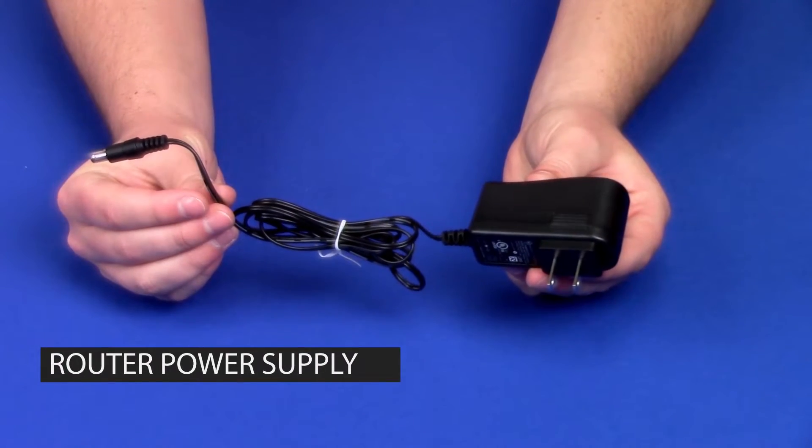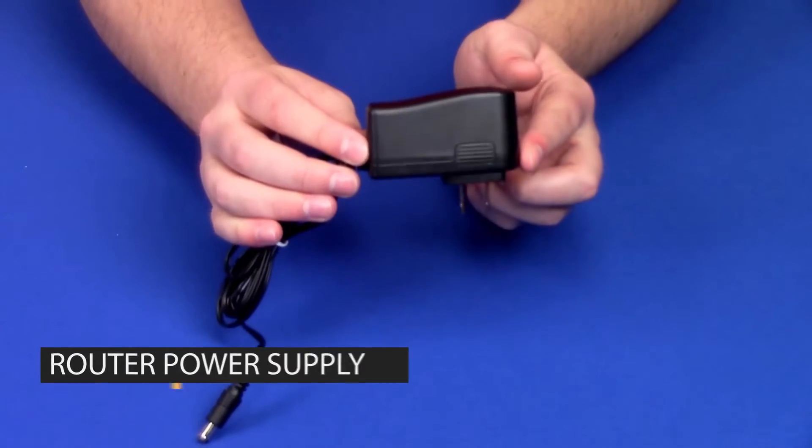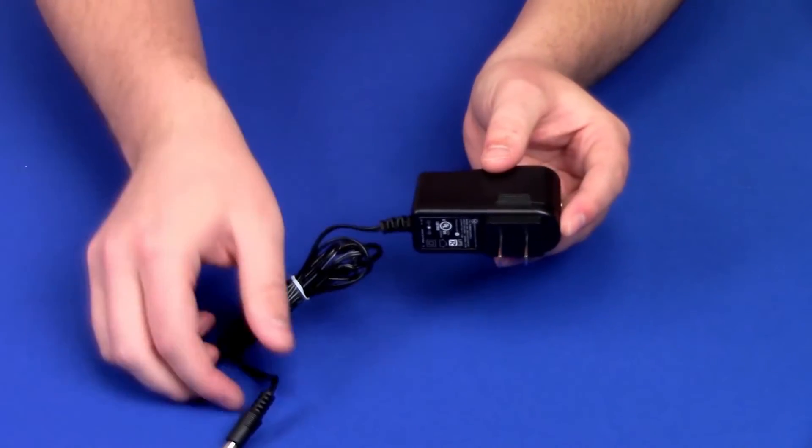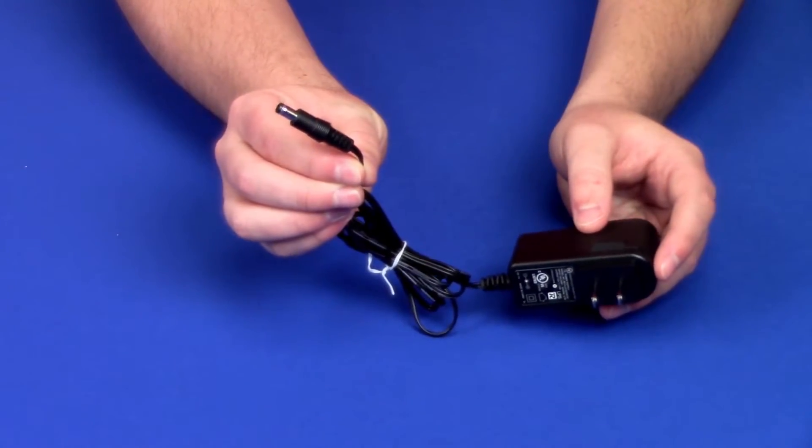Next, we have a power supply. This is a 120 volt outlet on one end, and on the other end it will plug into the back of the router.